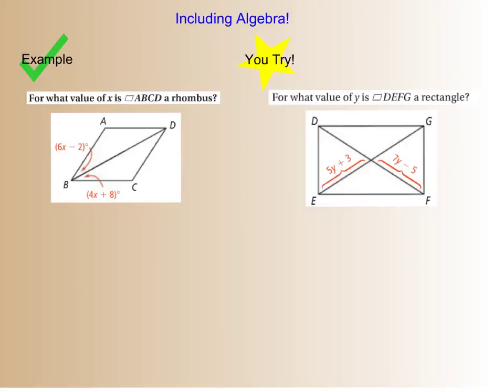The last thing we're going to look at here is including algebra in these problems. So for the example, I want to know what is the value of x that I need in order for parallelogram ABCD to be a rhombus. Well, if I want this thing to be a rhombus, then I must have this diagonal bisecting my angles, which means what I want to do is set 6x minus 2 equal to 4x plus 8.